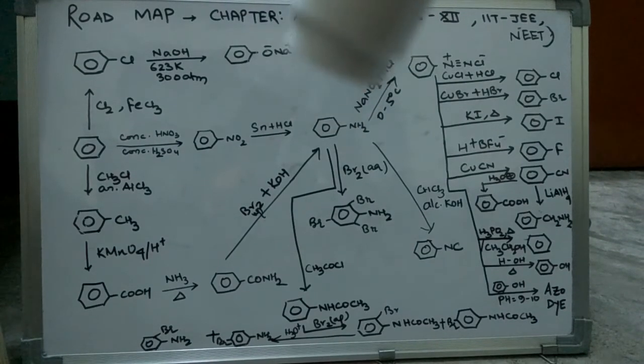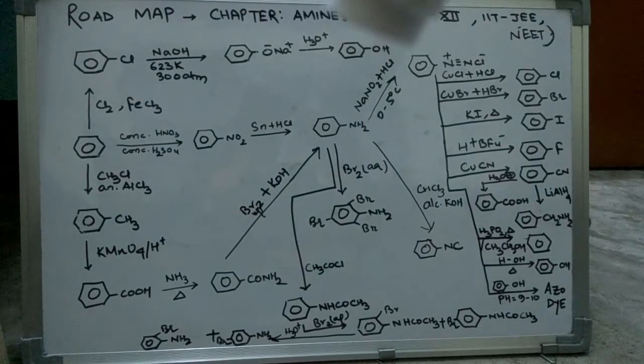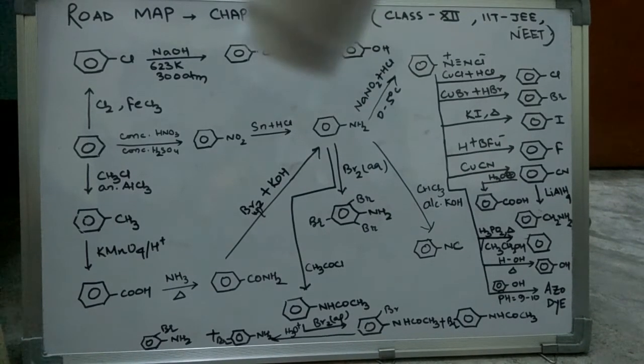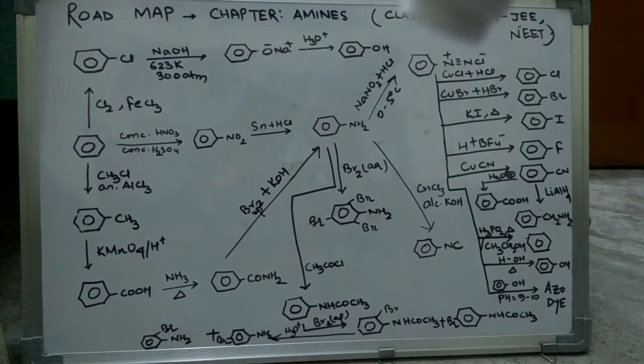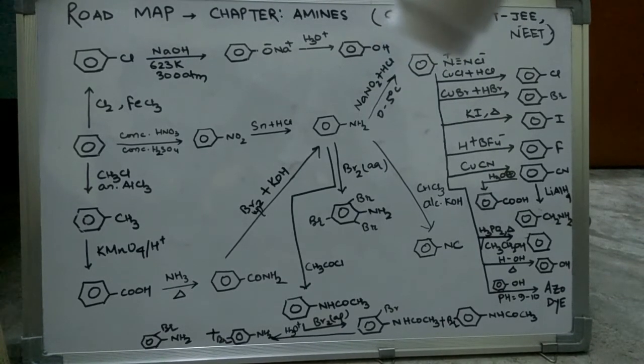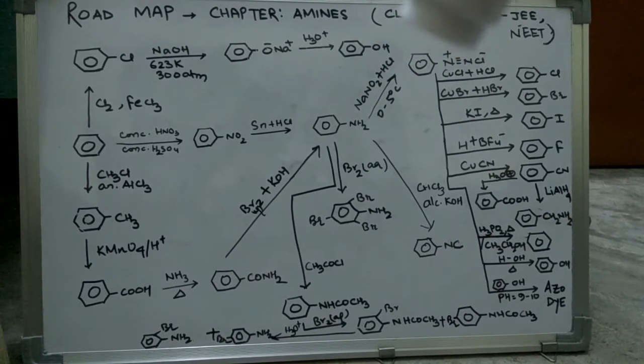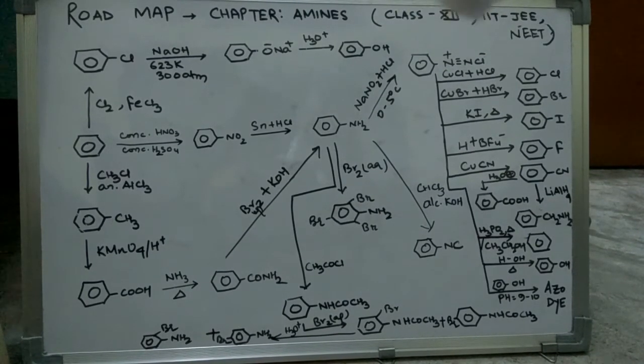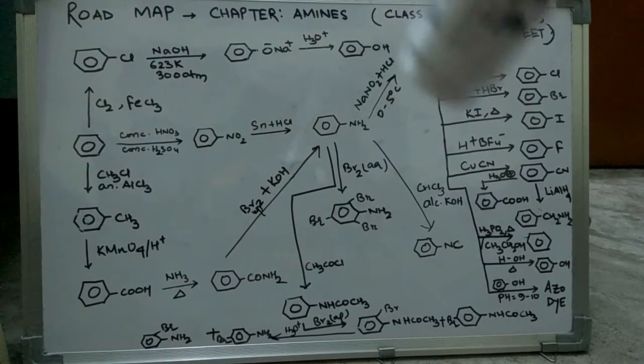Now this is the most important part. When we apply NaNO2 plus HCl at 0 to 5 degrees Celsius to aniline, we get benzene diazonium chloride, which is benzene linked with N2 plus and Cl minus.